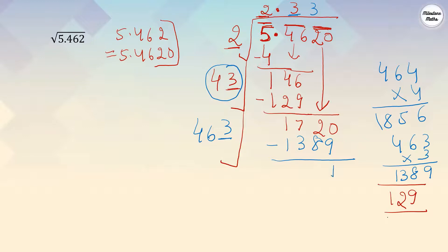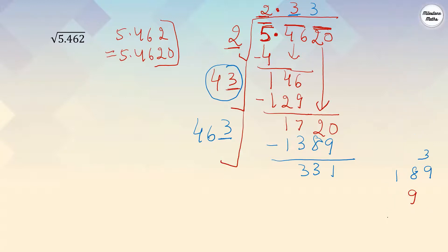463×3=1389. Subtract from 1720 and you get 331. We are not getting 0 here, so we keep dividing. For the answer, two decimal places is fine. To give the answer correct to two decimal places, you find it to three decimal places, then round.